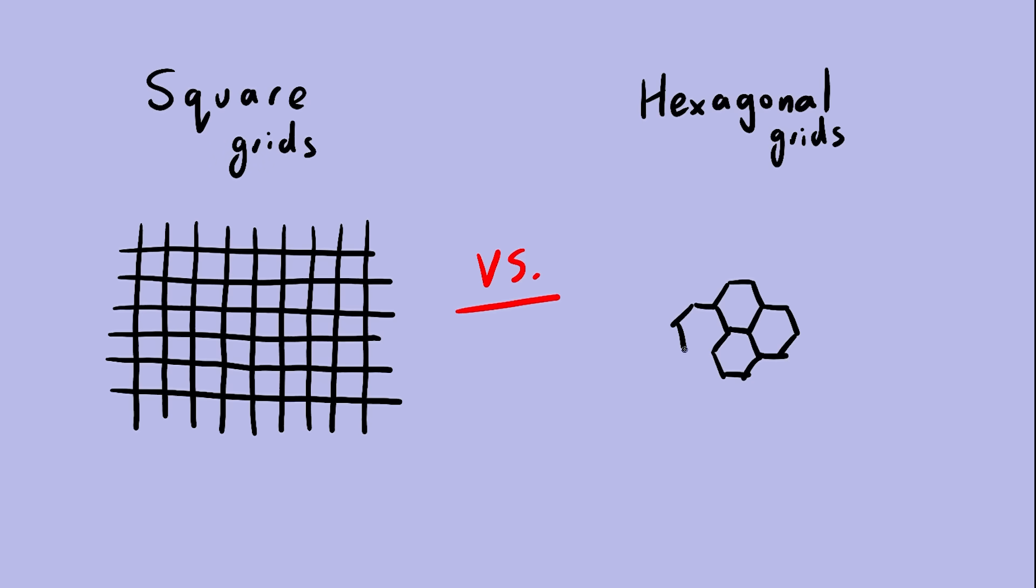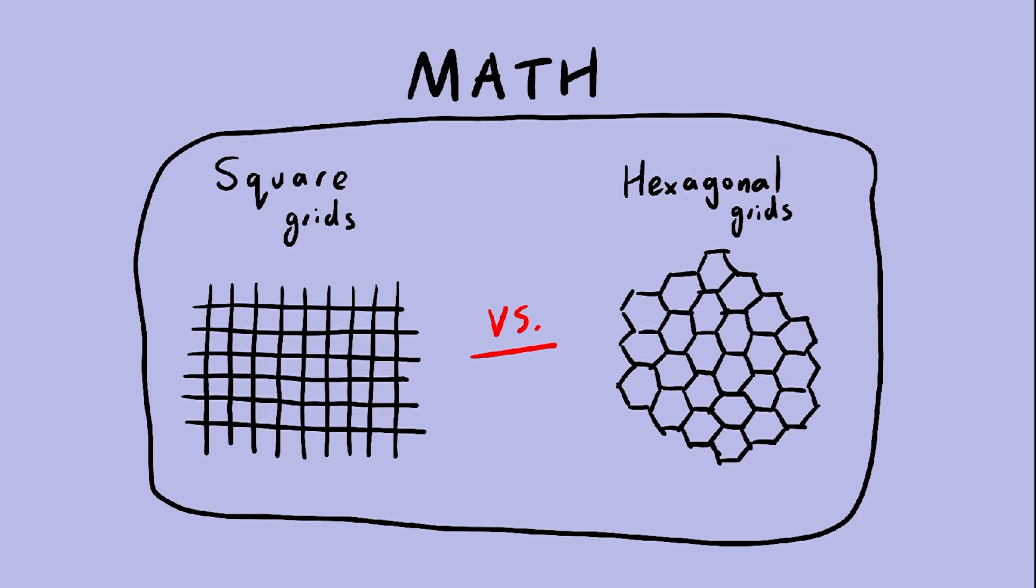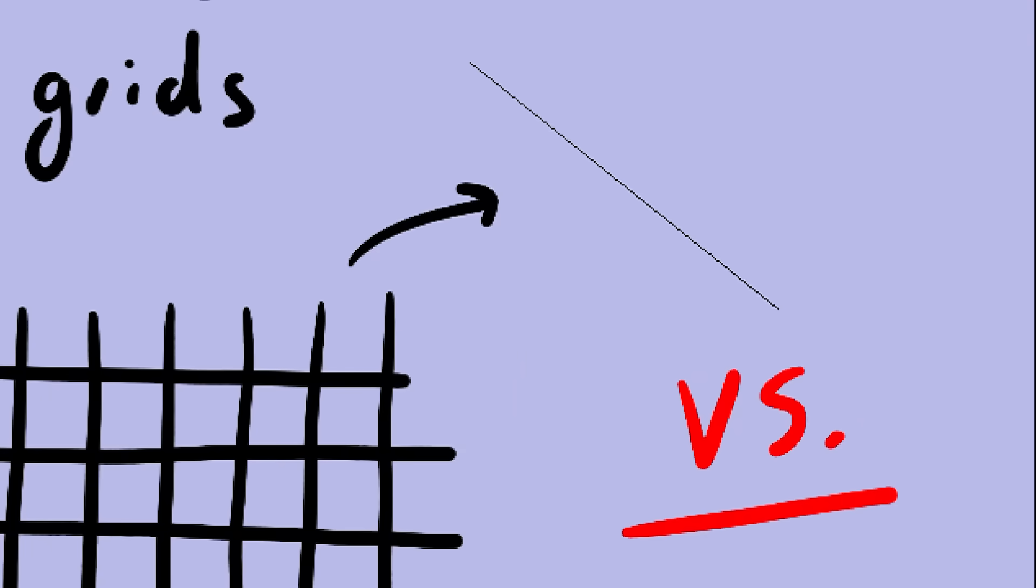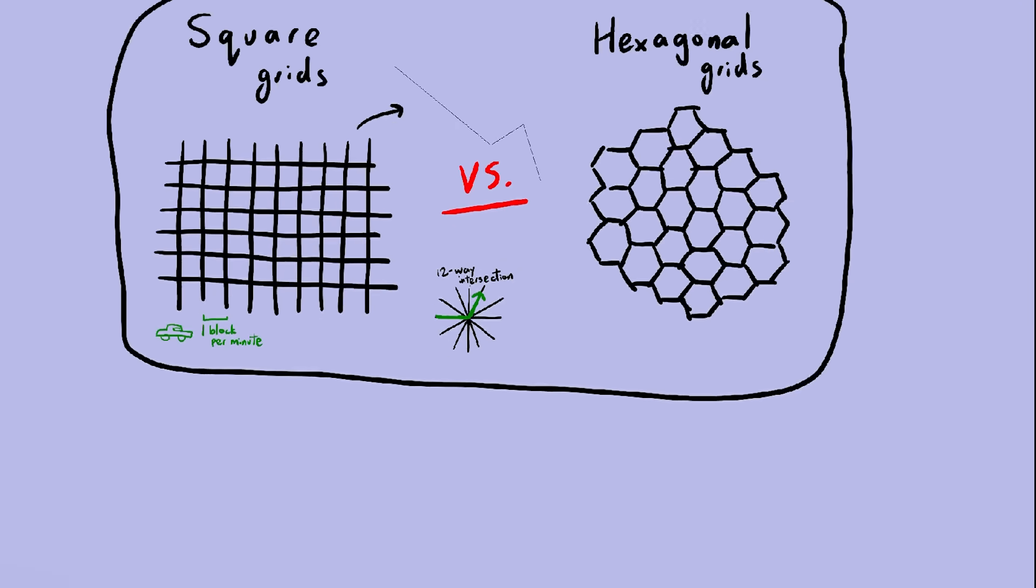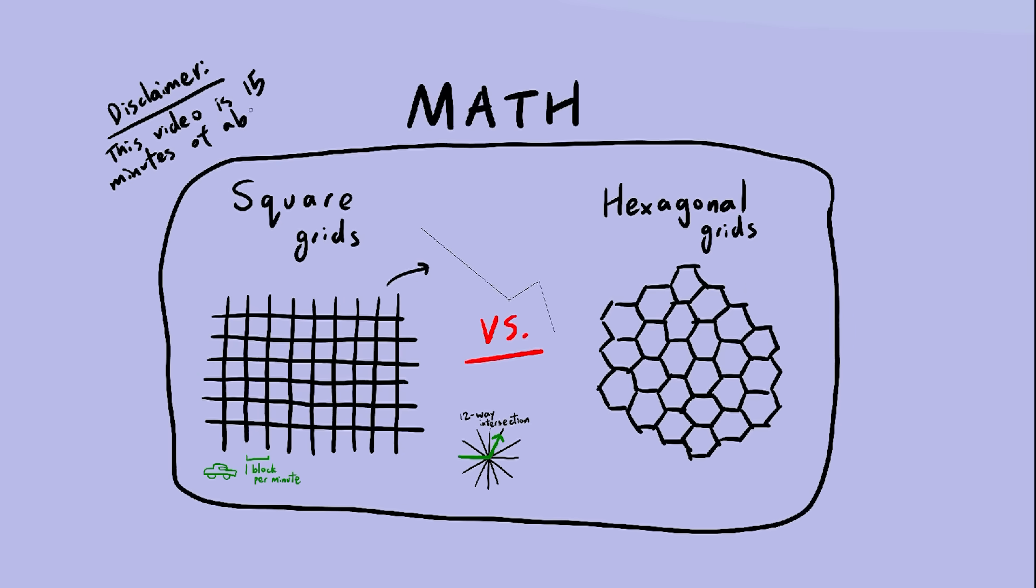Welcome back to another episode of Messing Around With Math. Yes, this is a math video, not a civil engineering one. All roads will be infinitely thin, and all cars will drive at a constant speed through 12-way intersections without stopping. You didn't really think a video on this channel would be useful, did you? Alright, let's start.